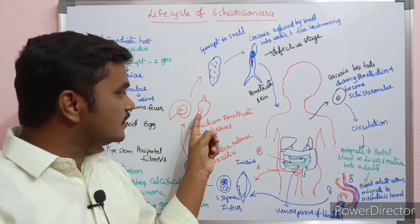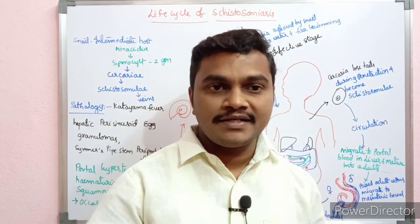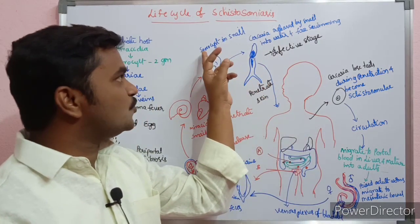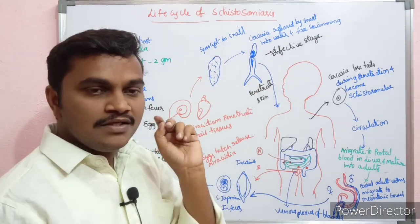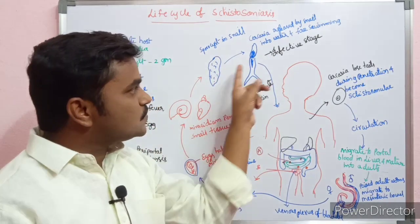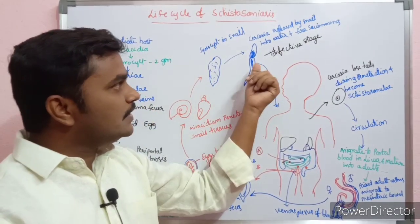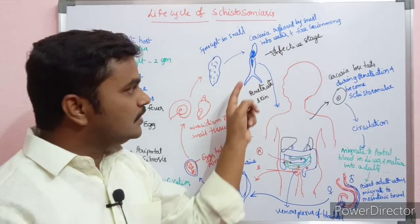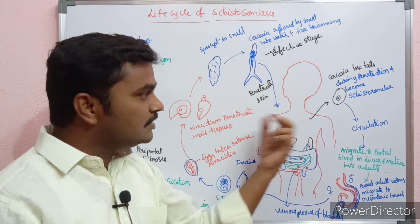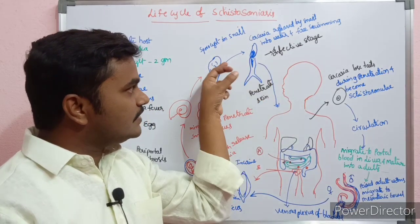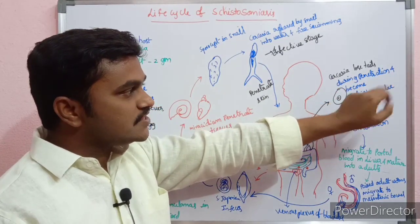Inside the snail, it turns into sporocysts — going through two sporocyst generations. Then cercariae are produced. The cercariae lose their tails during penetration and become schistosomulae.